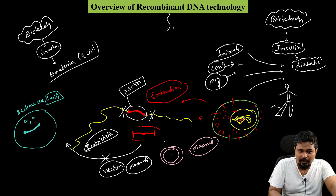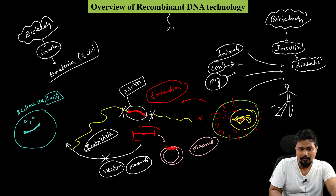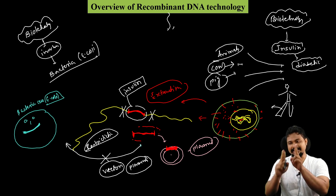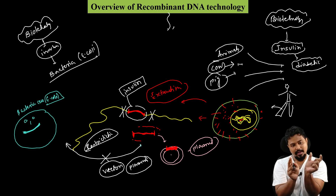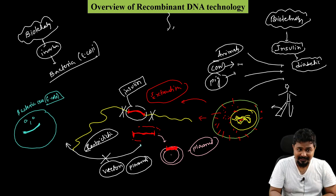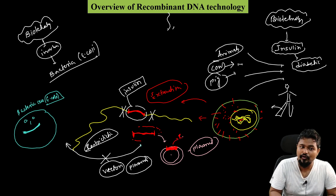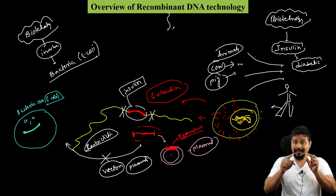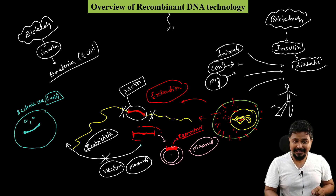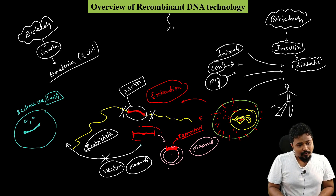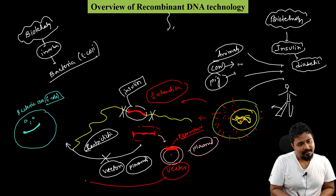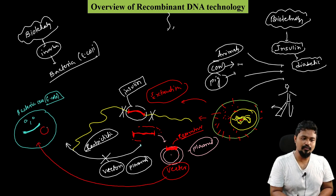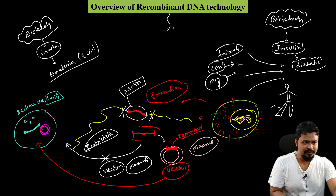Inside the bacteria there is circular DNA called a plasmid. We cut the plasmid using restriction enzymes and insert the insulin gene into it. After inserting the insulin gene into the plasmid, we get a recombinant plasmid — a new DNA combination that normally wouldn't exist. This recombinant plasmid is our vector.